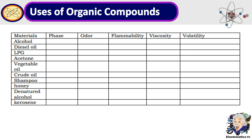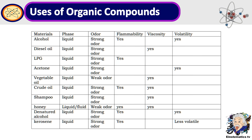Now let's move on to the next activity. This time you are given a list of organic compounds and you are going to identify its phase — whether it is solid, liquid, or gas. Try to identify its odor, whether it has a strong odor or a weak odor, and try to answer yes if it is flammable, if it is viscous, and if it is volatile. Good luck! Here are the correct responses — did you get it all correct? If so, congratulations!